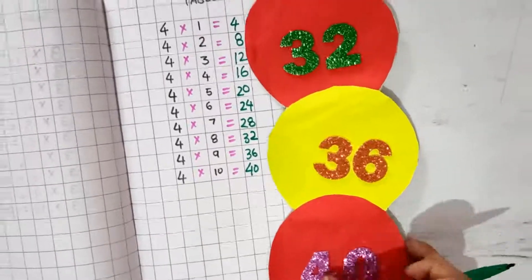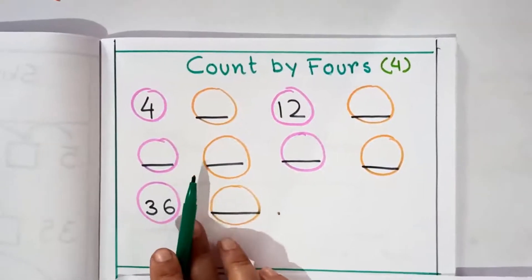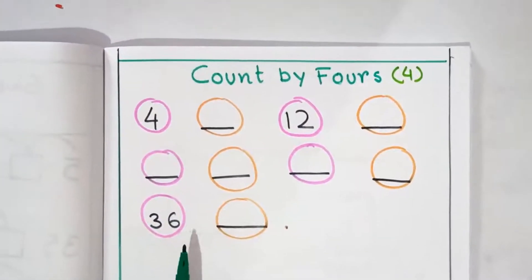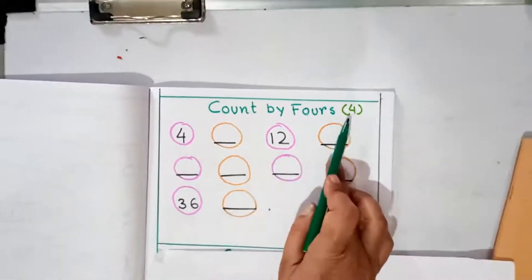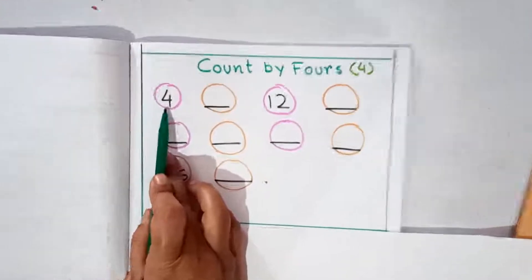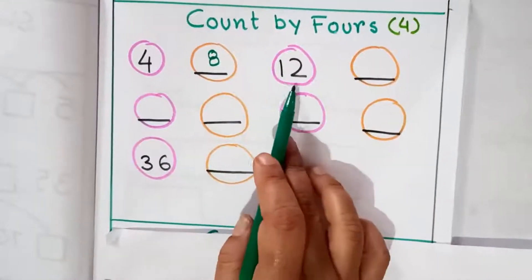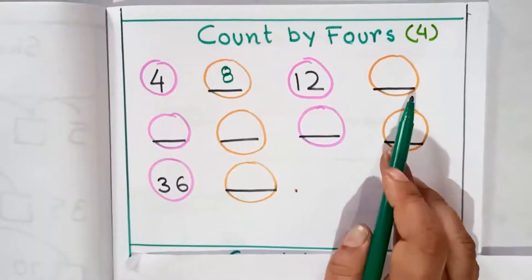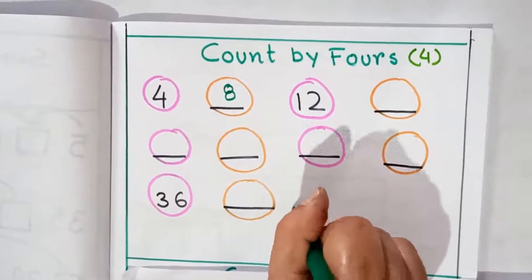Now I will show you one worksheet. This is a worksheet for you. Draw some circles and practice. Keep counting by 4. It's like 4 — after 4, which number is this? 8. Same way: 12, 16, and so on. You have to remember — keep counting by 4 and complete the worksheet.